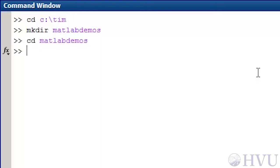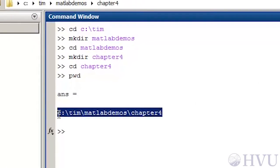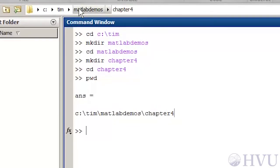Finally, I'll create a directory named chapter 4 and make that my current folder. I can check my current working folder by typing pwd for print working directory and pressing enter. The path to the working folder is also displayed in this text bar, if you prefer to check it there.